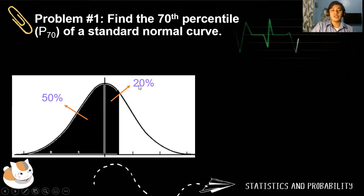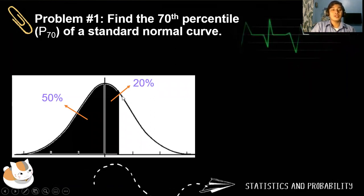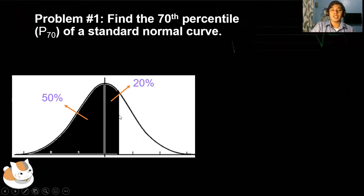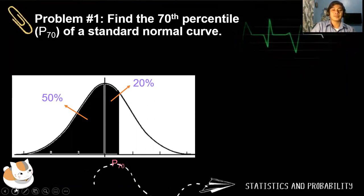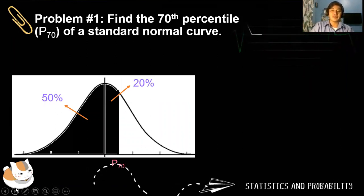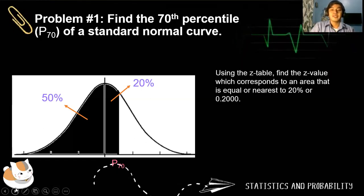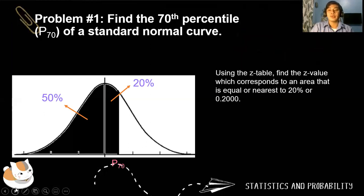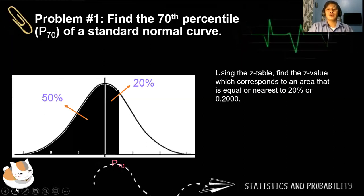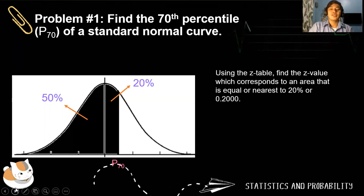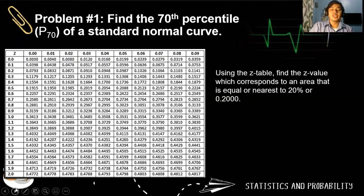Look at the given illustration. We have 50% plus 20%, and since it represents all the areas below, we shade only the left side of the distribution. That vertical line is represented by the 70th percentile, P sub 70. Using the table, find the Z value which corresponds to an area equal to or nearest to 20%, or 0.2000.